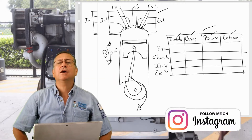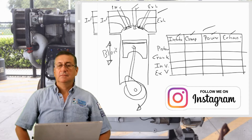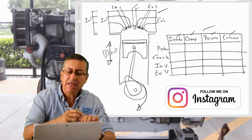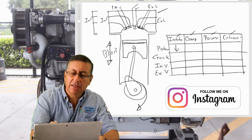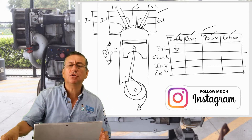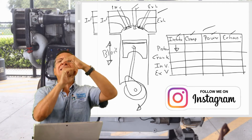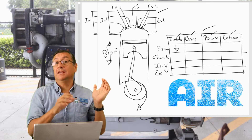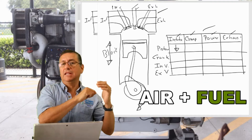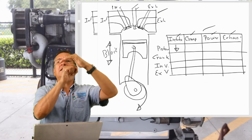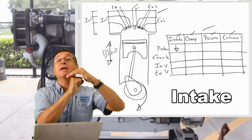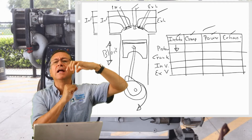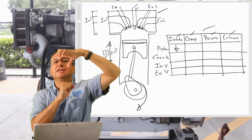I'm going to start with the intake. During the intake stroke, when the piston is going down, I want to enter air in the diesel engine, or air and fuel in the gas engine. And what valve is open — intake valve or exhaust valve? The intake valve is open and the exhaust is closed.